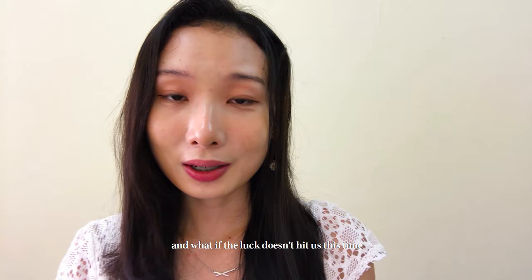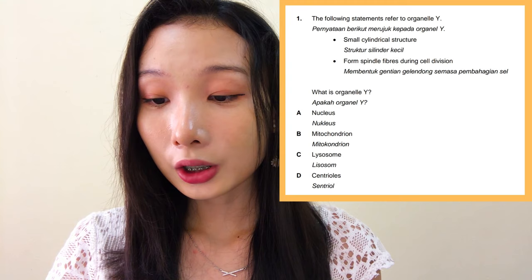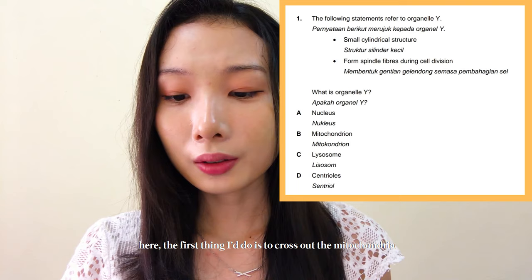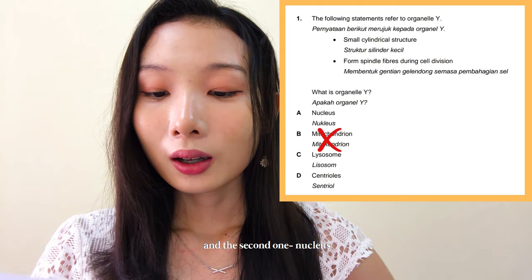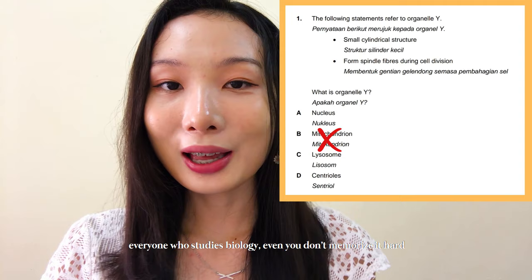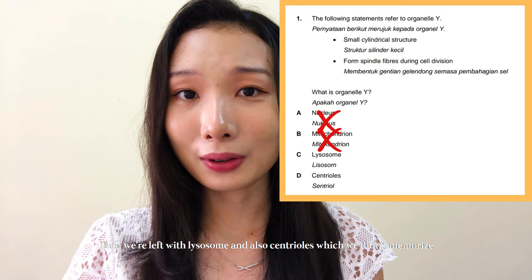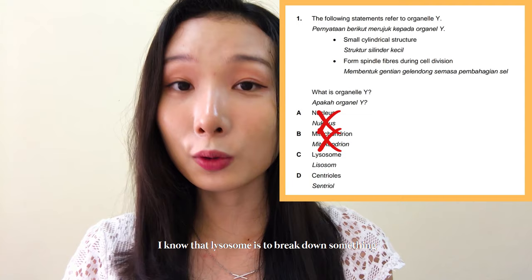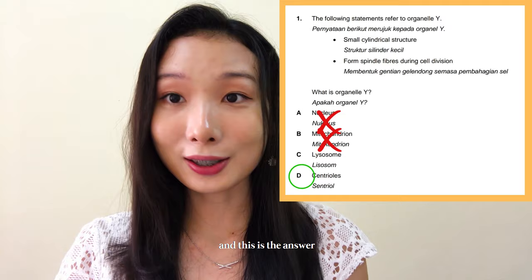Let's look at the next trial paper question: 'The following statements refer to organelle Y — small cylindrical structure, forms spindle fibers during cell division.' The first thing I do is cross out mitochondria because I memorized it and I know it is not related to cell division. Then nucleus — even without hard memorization, we know nucleus is for genetic material, so I cross that out too. We're left with lysosomes and centrioles, which I didn't memorize — but from my first reading I know lysosomes break things down, and since the statement clearly doesn't point to that, I confidently choose D, which is the correct answer. That's how the 4-2-1 rule helps in ruling in or ruling out incorrect answers so you can choose confidently.